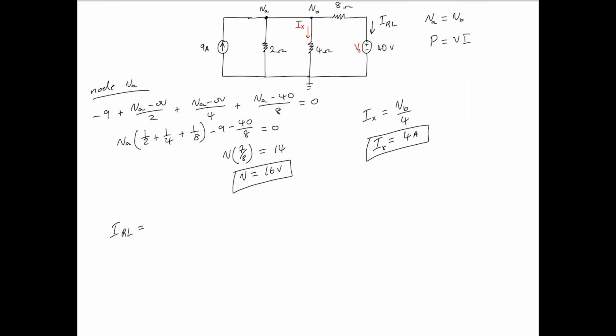and we use the rightmost expression from the node voltage equation. VA minus 40 volts all over 8 is equal to 16 minus 40 divided by 8, which is negative 3 amperes.